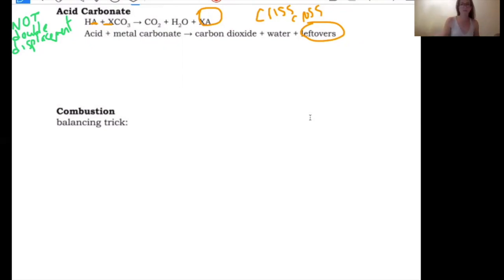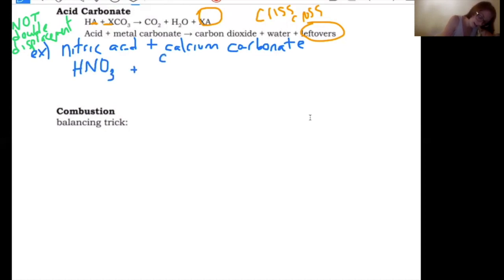Okay, so for example, if I said nitric acid plus calcium carbonate. Nitric acid, you should have memorized. I mean, not yet. You just started this today. But nitric acid is HNO3. And calcium carbonate. Well, calcium is a plus two. Carbonate is a minus two. So when I crisscross, I don't, both of those two cancel out or reduce. And we end with CaCO3.